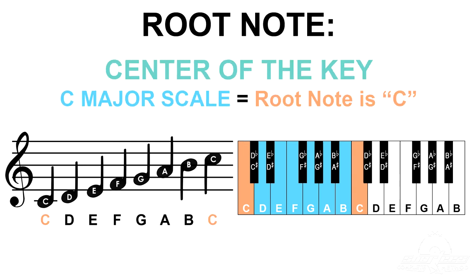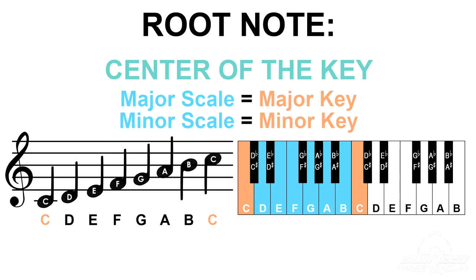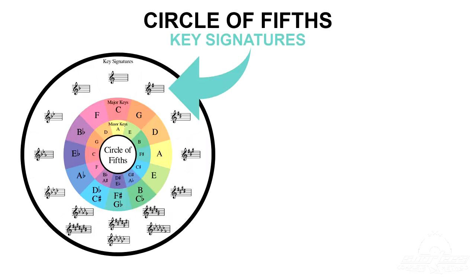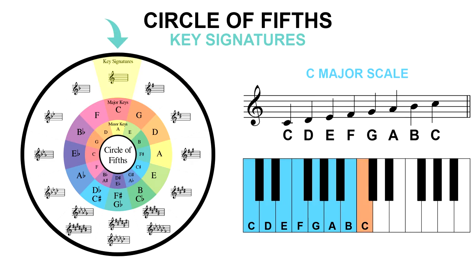The root note of the scale acts as the center of the key. In the C major scale, the root note is C. The minor scale is based on a minor key and the major scale is based on a major key. All songs have key signatures. A key signature is a code in music that tells you how many sharps or flats are in each scale and appears at the beginning of a piece of music. The circle of fifths diagram makes it super easy to see how many sharps or flats are in each key. At the top of the circle of fifths diagram, the key of C has no sharps or flats — C, D, E, F, G, A, B.